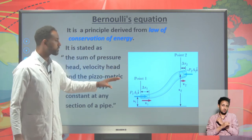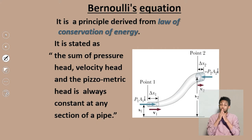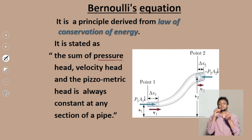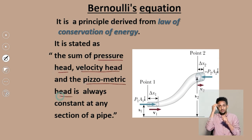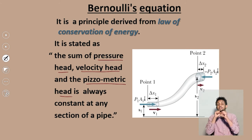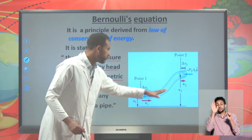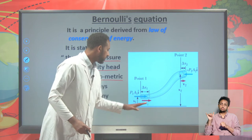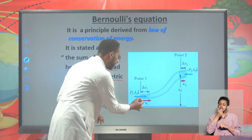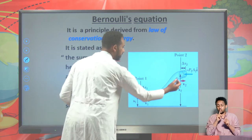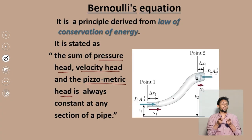What are those three quantities? The sum of pressure, velocity head, and piezometric height always remains constant at any section of the pipe. If you have a pipe with uniform or laminar flow, at any point — point one, point two, point three — the summation of these three quantities always remains constant.